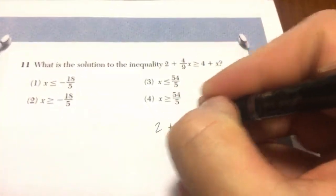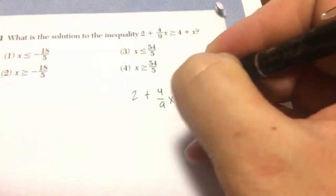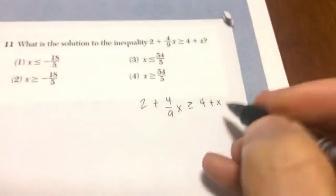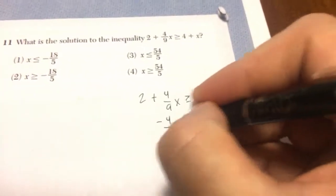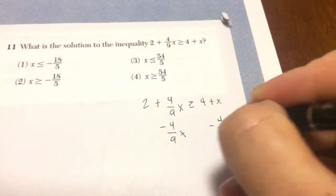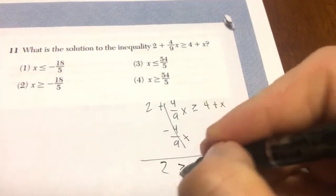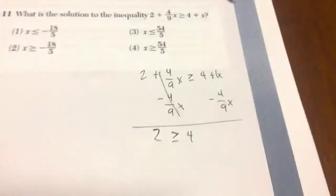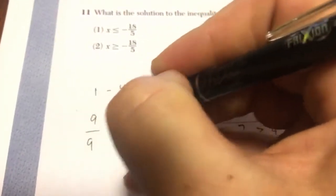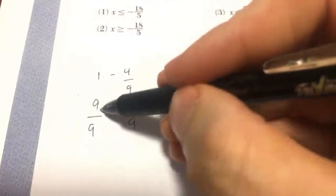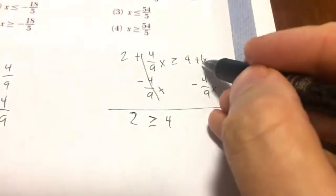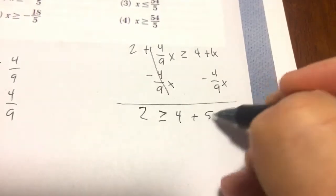What is the solution to this inequality? If I were to solve this, I subtract 4/9x, subtract 4/9x. I get 2 is greater than or equal to, now 1 minus 4/9 is the same as saying 9/9 minus 4/9. I get 5/9, so 1 minus 4/9 is 5/9x.